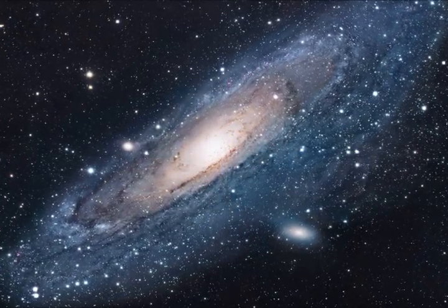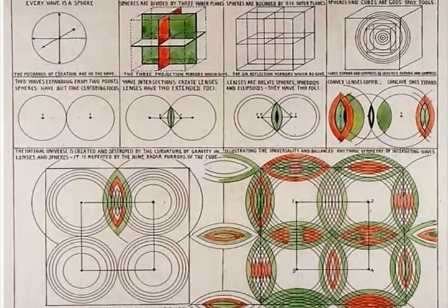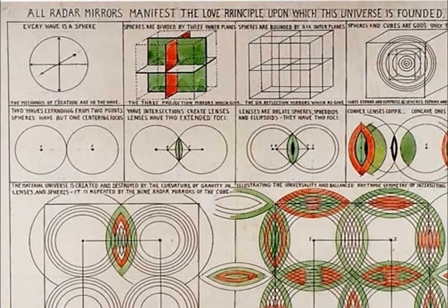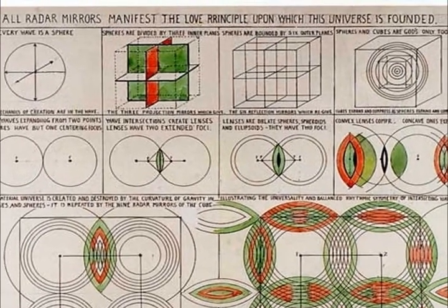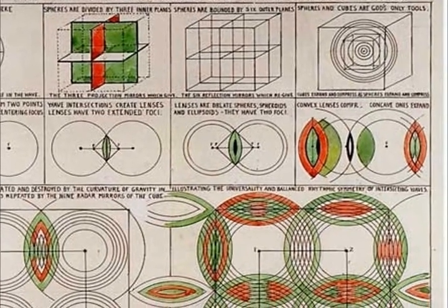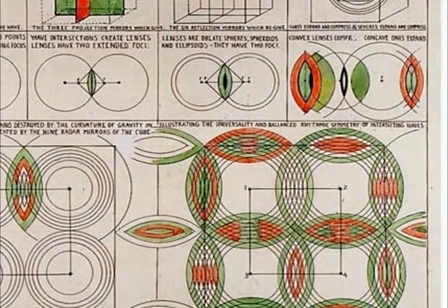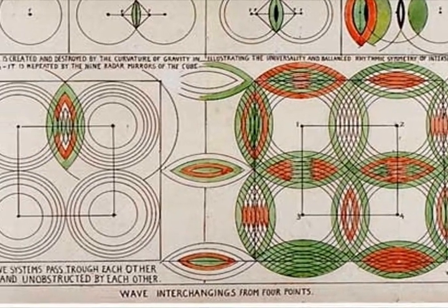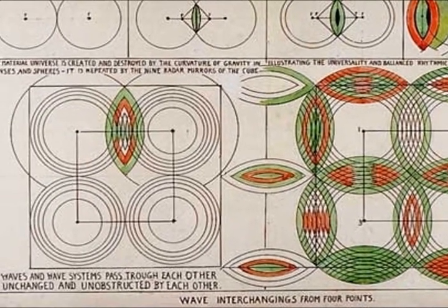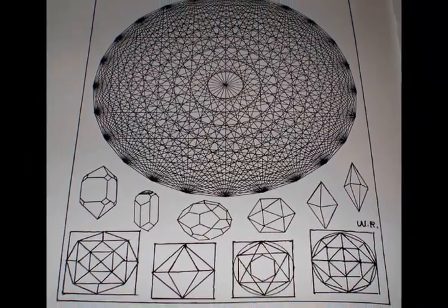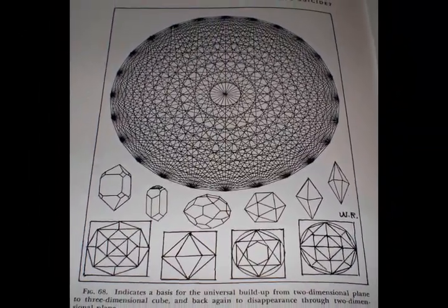This image by Walter Russell is rich in detail showing how spiraling electric vortices in the three dimensions of cubic wave fields produce electric rings and spheres whose wave fronts pass through each other unobstructed and create electric light lenses which expand and compress these spiraling electric waveforms to produce all possible geometries found throughout the infinite universe.